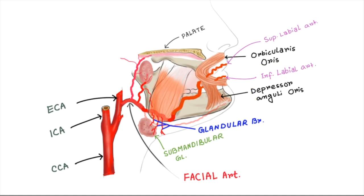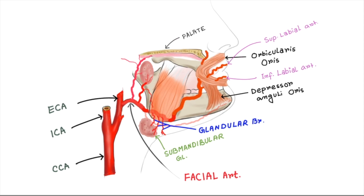The superior labial artery is large and more tortuous; it supplies the upper lip and gives off an alar branch and a septal branch which ramifies anteriorly and inferiorly in the nasal septum. The next branch is the lateral nasal artery, which supplies the dorsum and alar of the nose and anastomoses with the contralateral lateral nasal artery. Sometimes this artery may be replaced by a branch from the superior labial artery.